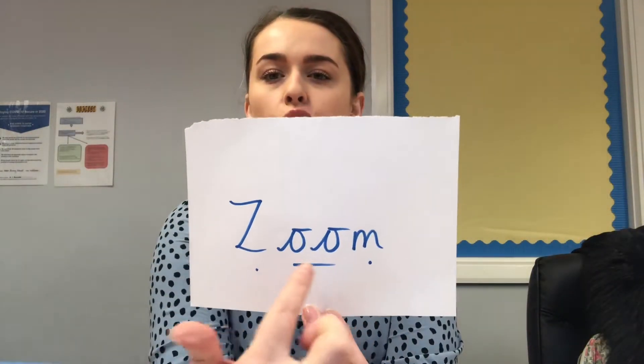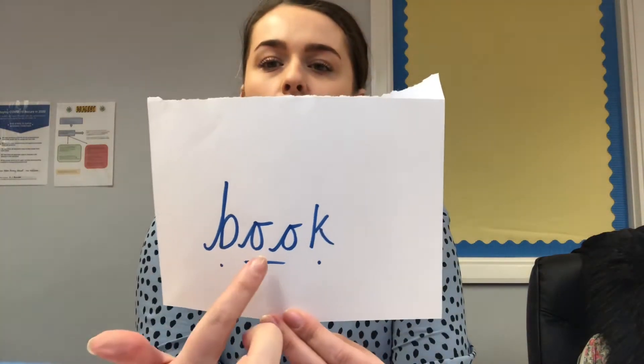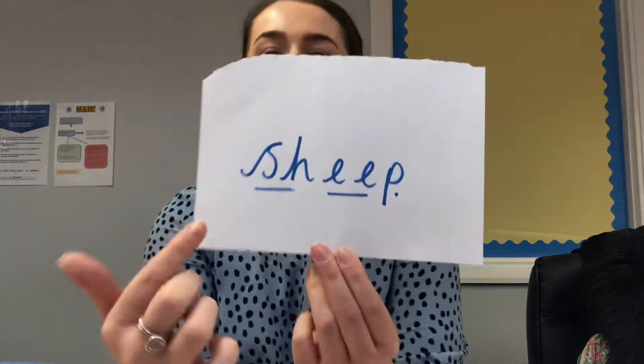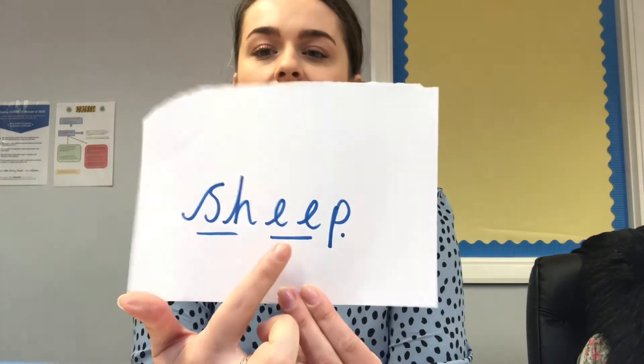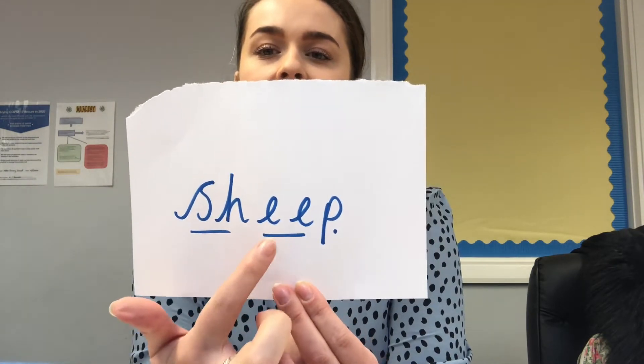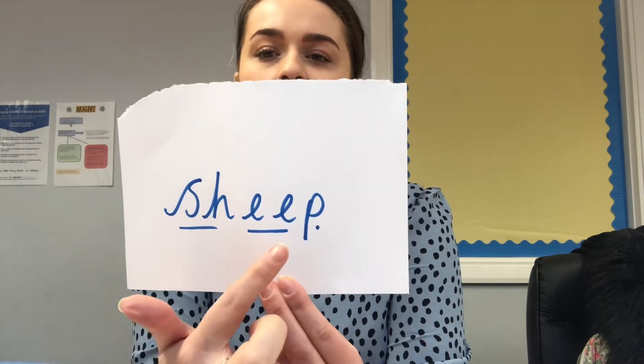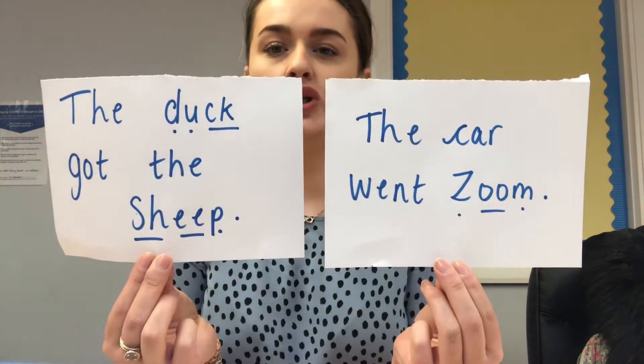So we've got 'zoom' — z-oo-m, zoom. Then 'book' — this has got two digraphs, but we only did this one the other week. And our last word is 'rain' — rain.